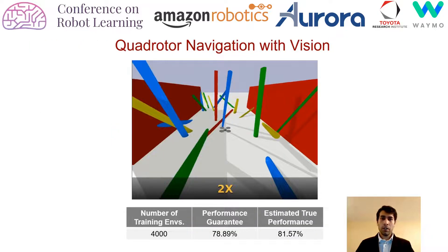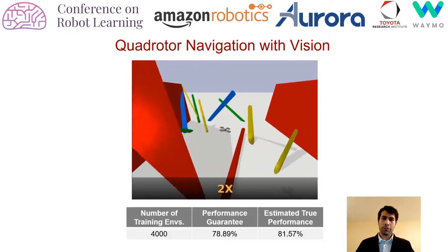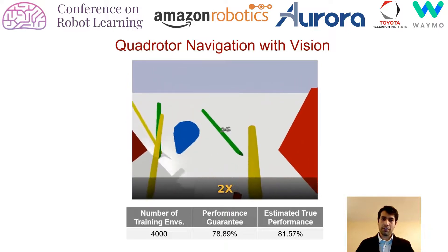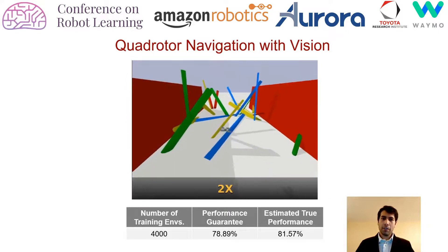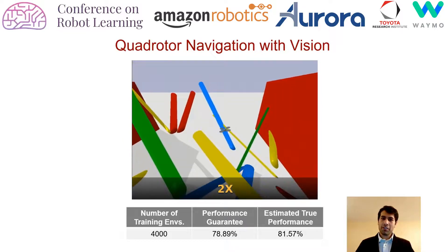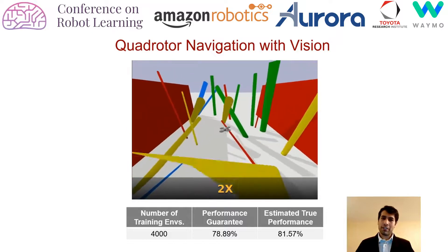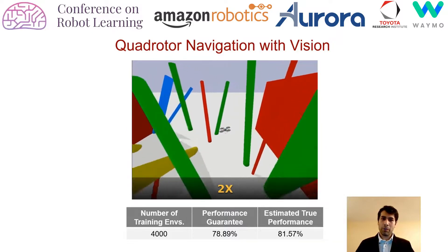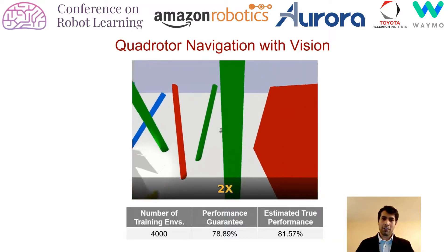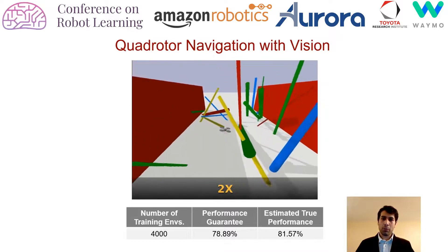Now, let's use our framework on a couple of robot navigation tasks. This first task is the navigation of a quadrotor in an obstacle field using onboard vision sensors. Here we achieve a performance guarantee of about 78%. What this means is that, on an average, the quadrotor will get across 78-79% of the environment before it collides with an obstacle. The estimated true performance is about 81.5%.